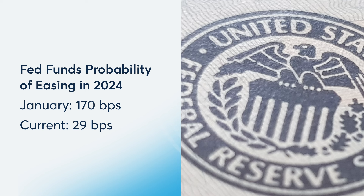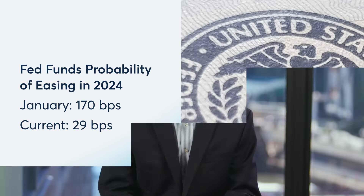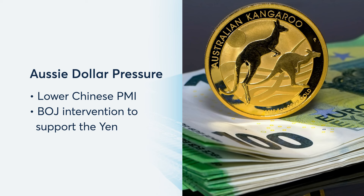Now that number has collapsed to 29 basis points. But the Aussie dollar has suffered more than the euro, and perhaps that's because of some trouble in their neighborhood. This week's China PMI numbers came in lower than expected, causing some speculation that the Chinese economy is headed lower.